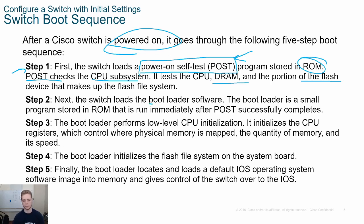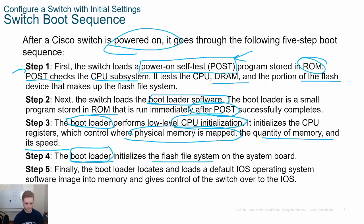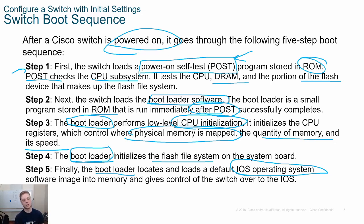Then we go into the bootloader software, which runs immediately after POST and is stored in ROM. It's going to initialize some of our hardware like the CPU, controlling where memory is mapped, how much memory we have, et cetera. The bootloader then initializes flash and locates the IOS operating system — either one we've set or the default. It finds that IOS image and loads it.